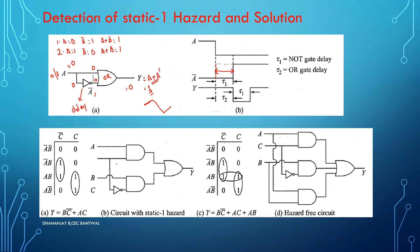Let us take one more circuit. The output of the first AND gate is A·C. The output of the second AND gate is B·C-bar. The overall output here will be A·C + B·C-bar.